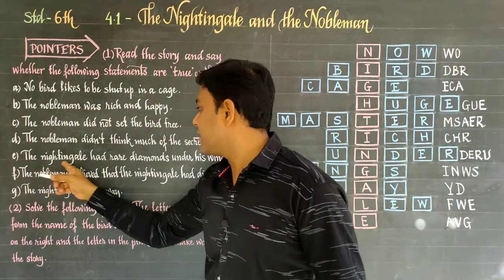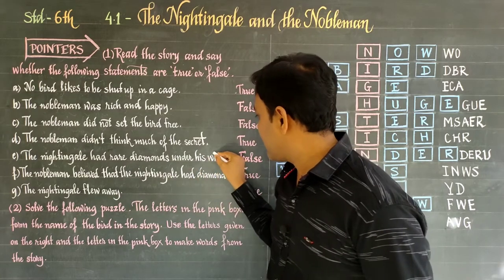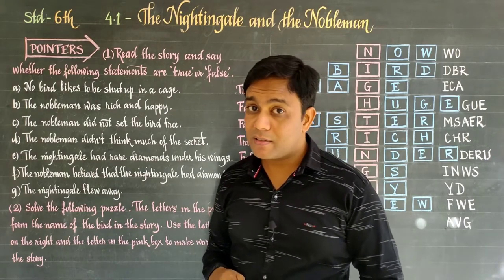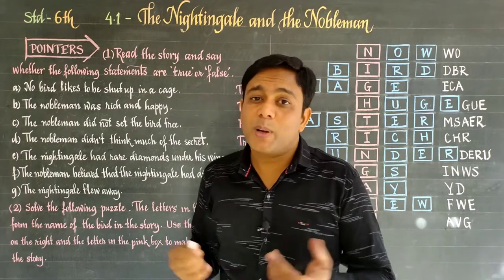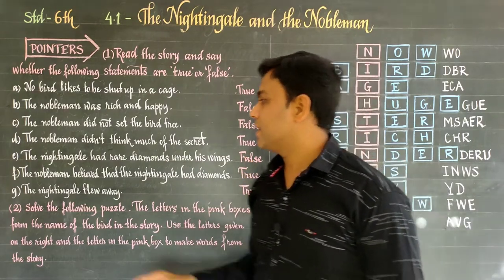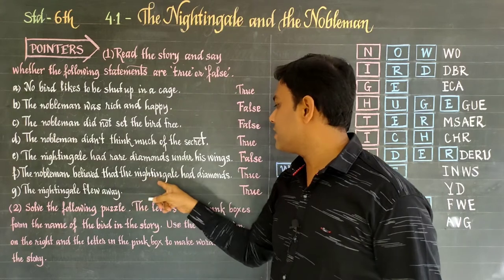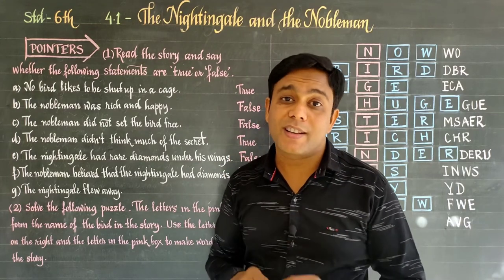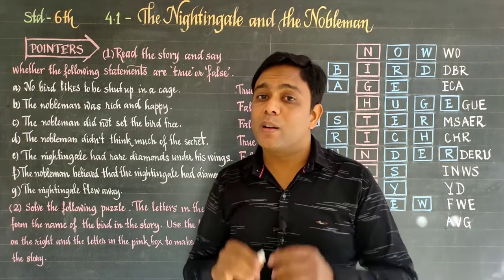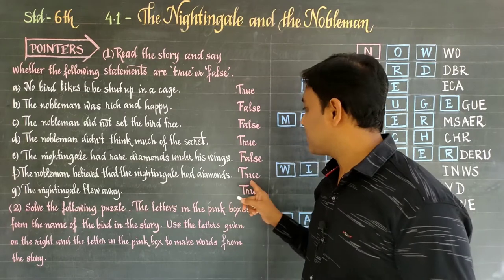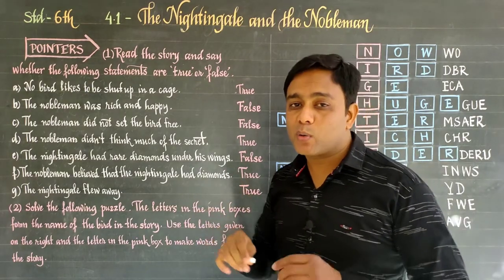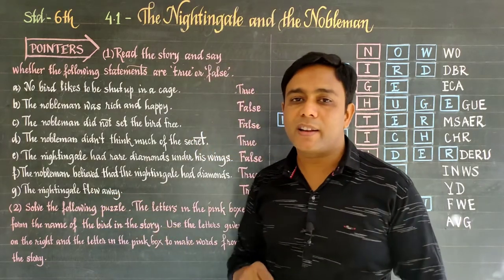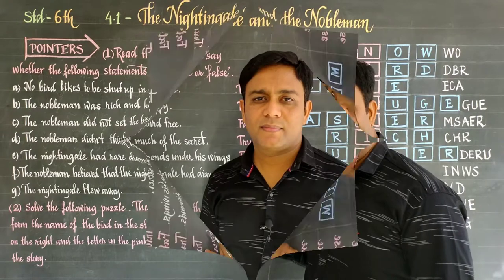Next statement: the nightingale had rare diamonds under his wings. The nobleman believed that the nightingale had diamonds under its wings, so that statement is true. The last statement: the nightingale flew away — this is also true. Students, now we have question number two.